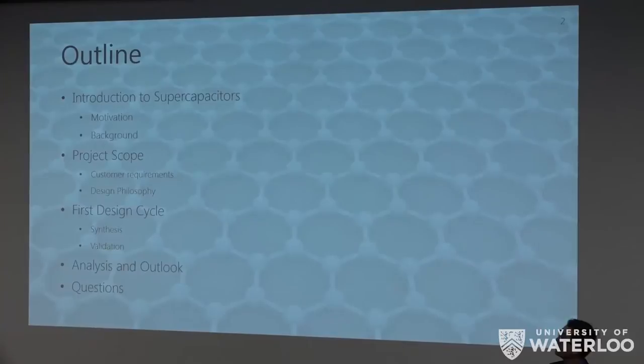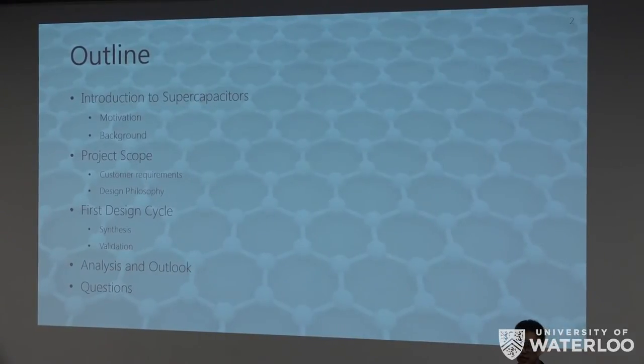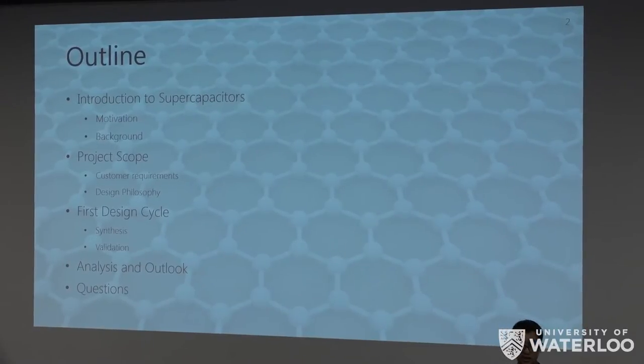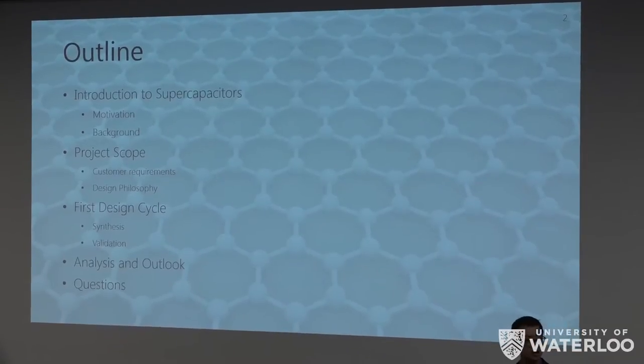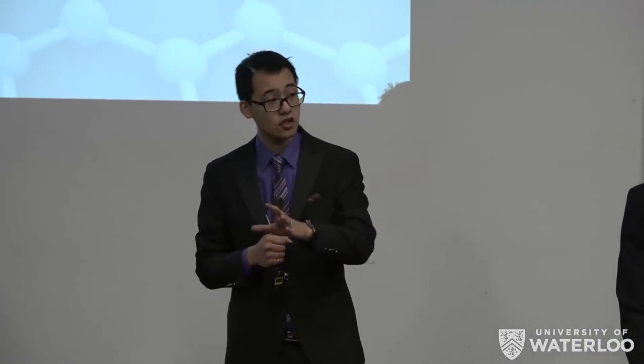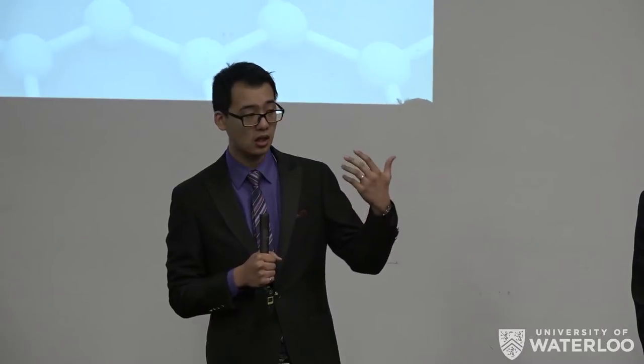As mentioned, we're presenting our fourth-year design project on the design of graphene oxide materials for supercapacitors. What we're going to talk about today is a brief introduction to supercapacitors and the critical parameters that were critical to the design, then we're going to dive into our project, the scope, our design philosophy, what we did, the tests we ran, and the results we got. That's essentially our first design cycle, and then we'll look at analyzing the results, drawing conclusions, and making remarks on the future outlook.